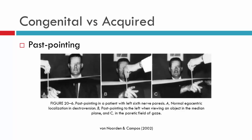Past pointing really only occurs in recently acquired deviations, and sometimes will only be present within the first several days of acquiring the neurogenic palsy. If you reassess the patient in six weeks, six months, or a year, they will no longer demonstrate past pointing. This is one of the reasons it's not used commonly in clinic, as there are other ways to determine if a patient has a recently acquired neurogenic palsy.